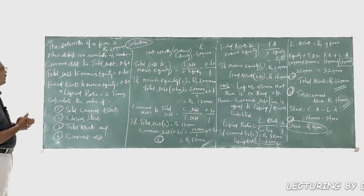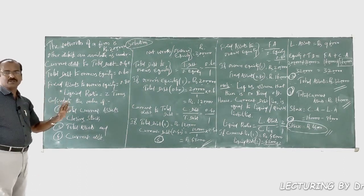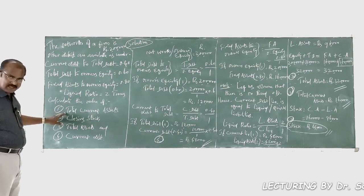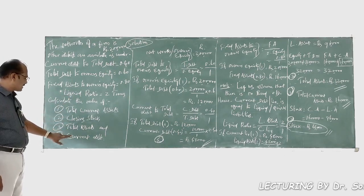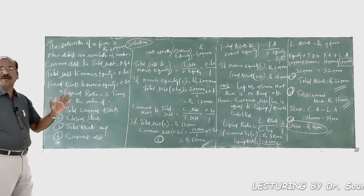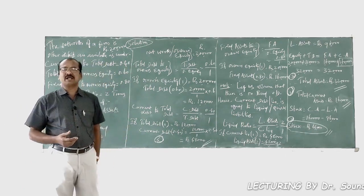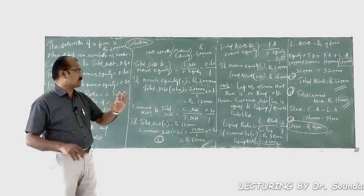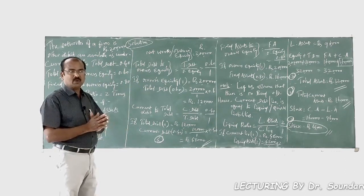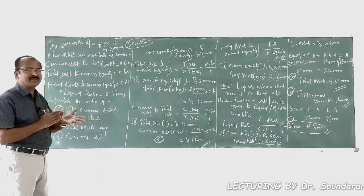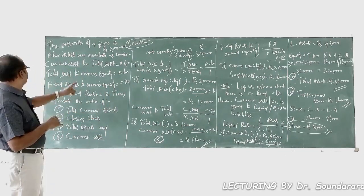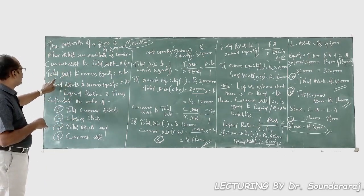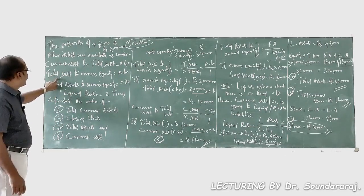All the information given in the problem — net worth is given as an amount, the rest are given in terms of times. We are asked to calculate the value of total current assets, closing stock, total assets, and current debt. The only amount given is net worth, which is nothing but owner's equity or shareholders' net worth, amounting to two lakh rupees. We pick a ratio related to shareholders' net worth — total debt to owner's equity.